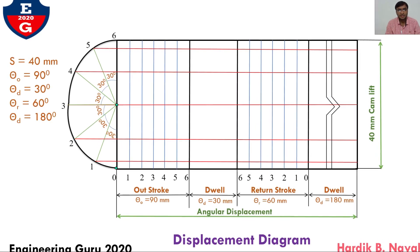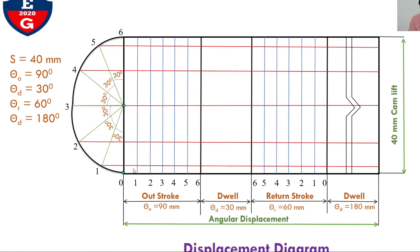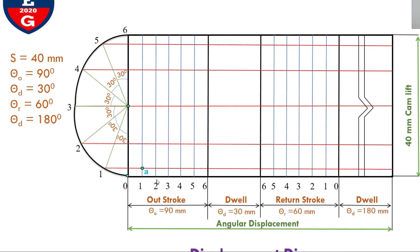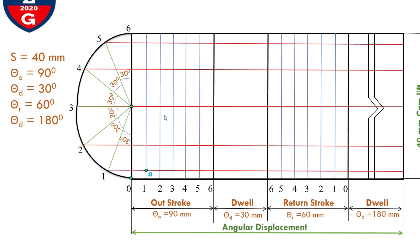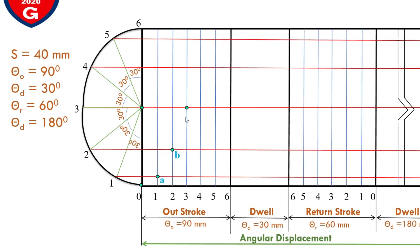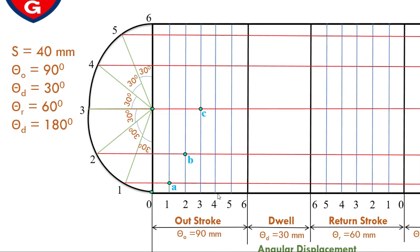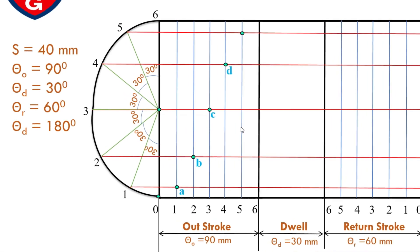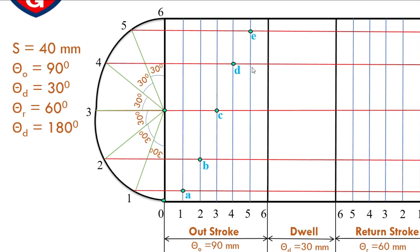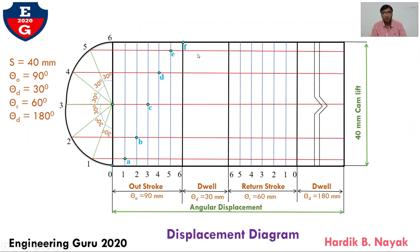During outstroke, in order to plot the points: the first division vertical line and the semicircle first division horizontal line intersect to give point A. Similarly, the second division vertical line and second semicircle horizontal line intersect to give point B. The third division vertical line and horizontal line intersect to give point C. In the same way, find point D from the fourth division, point E from the fifth division, and final point F.